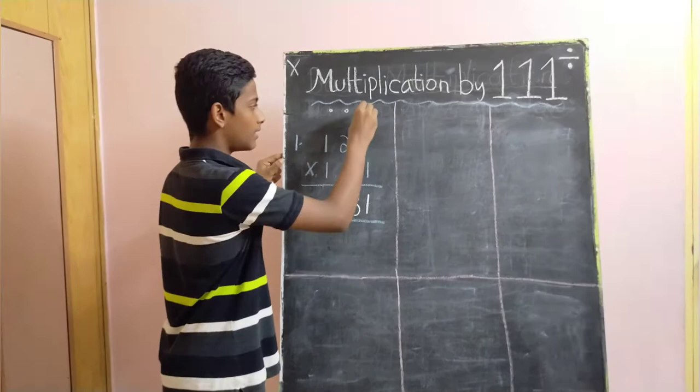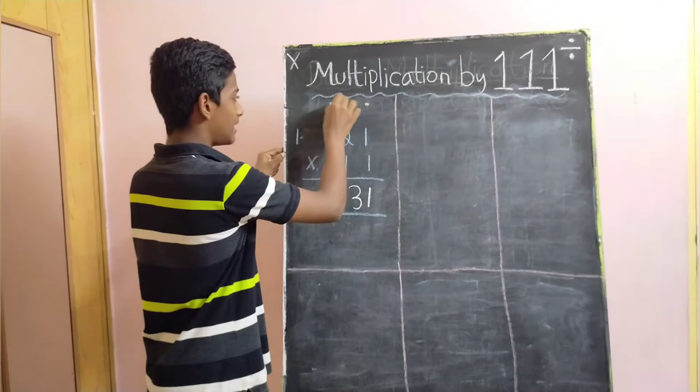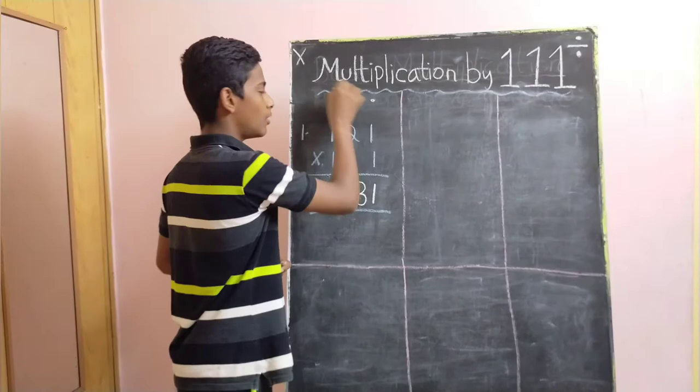You have to first bring down this dot over here, then add these 2, then add these 3 and write it over here, then add these 2 and this 1. This is like a pattern: 1, 2, 3, 2, 1.